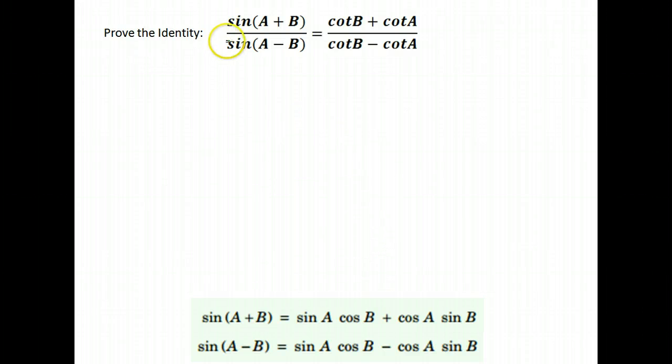We're going to take a look at another identity we would like to prove. We would like to prove that sine of A plus B over sine of A minus B is equivalent to cotangent B plus cotangent A over cotangent B minus cotangent A. I'm going to work from the left side, make it look like the right side.